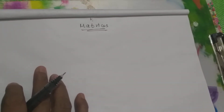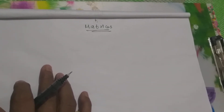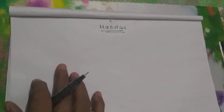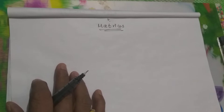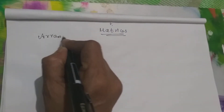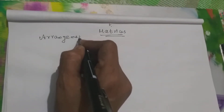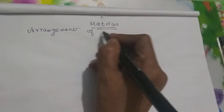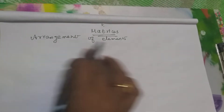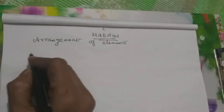Good morning students. I am starting instruction for matrices. When it is one single matrix, you can say it is a matrix. What is a matrix? It is an arrangement of numbers, or an array of elements or numbers or anything. It is called a matrix.